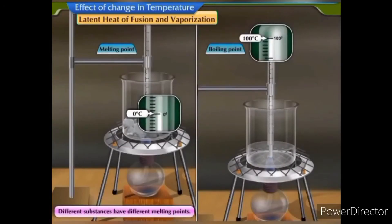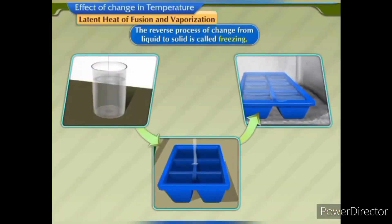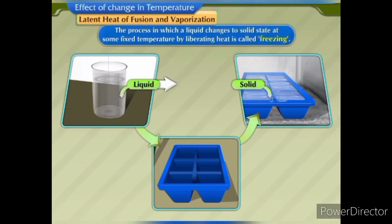Different substances have different melting points, and similarly their boiling points are also different. Melting and boiling points are unique characteristics of a substance. The reverse process of change from liquid to solid is called freezing. The process in which a liquid changes to solid state at some fixed temperature by liberating heat is called freezing.